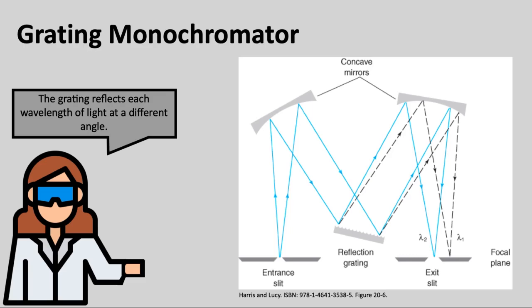The angle of diffraction grating dictates which wavelength of light reflects off the second mirror at the right angle to exit through the exit slit.